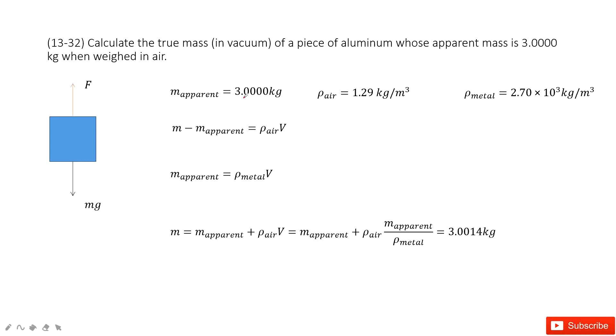So in this case, we can see the apparent mass is given, the density of air is given, the density of the aluminum is given. So in this one, we find the change of the mass.